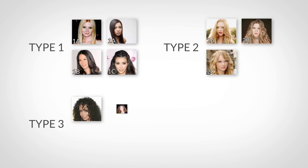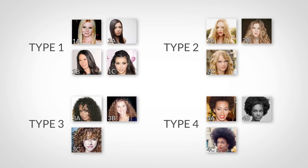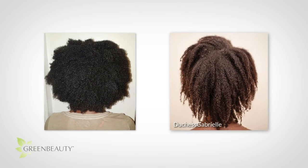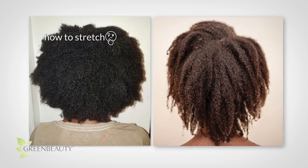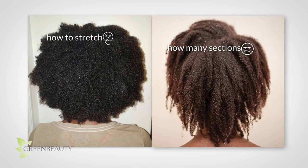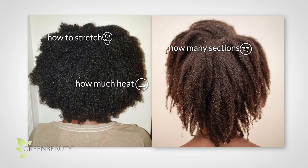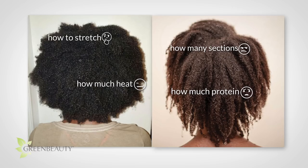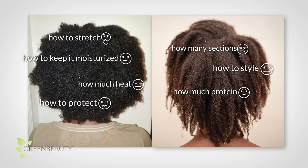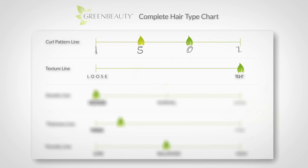Let me tell you why I'm not a huge fan of the current standard hair typing system. According to the 1A to 4C hair system, we're both 4B, 4C because our curl patterns are a mix of tight coils and kinks. But that doesn't really tell you anything about hair care. This hair type system doesn't give you any insight on how to stretch your hair, how many sections you should put your hair into, how much heat your hair can handle, how much protein to use, how to keep it moisturized, how to style and protect it, and how to use products correctly. The term 4C only gives you a small piece of the story.